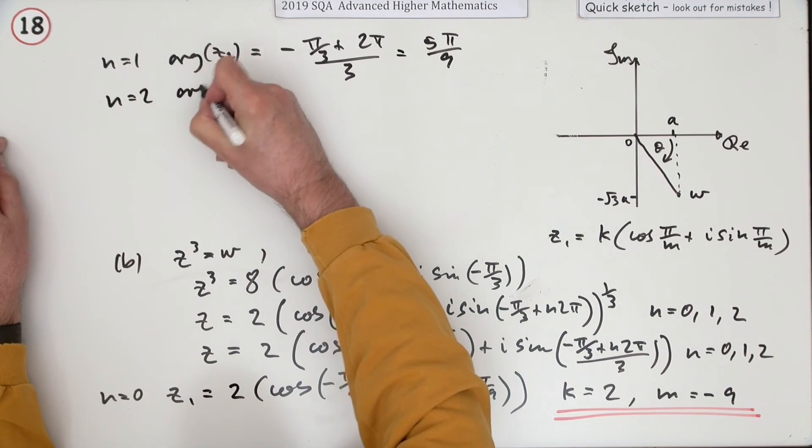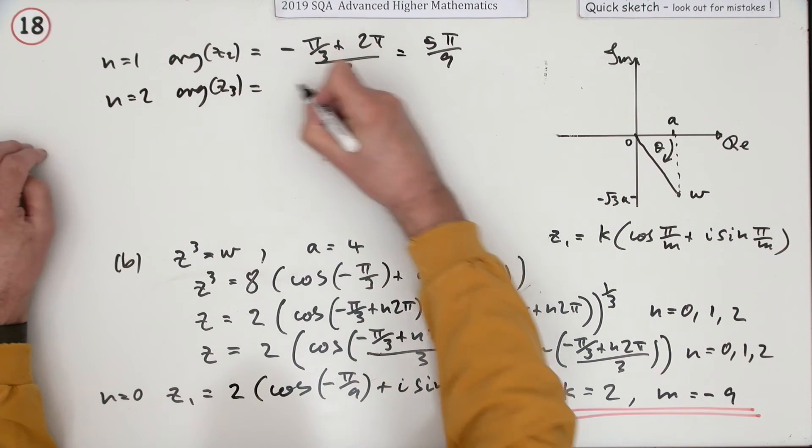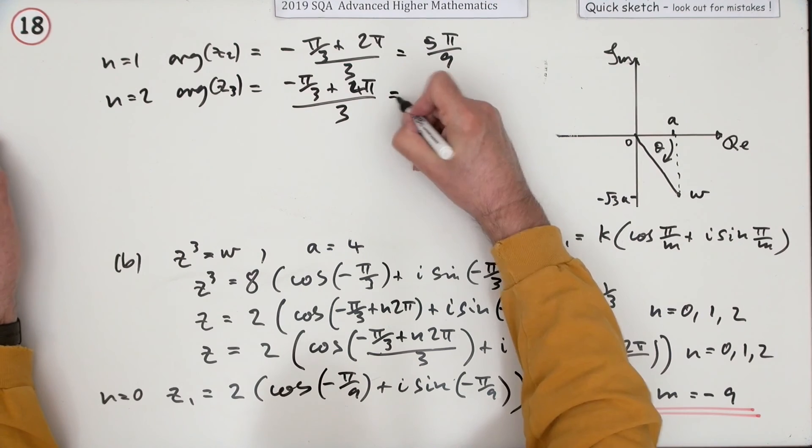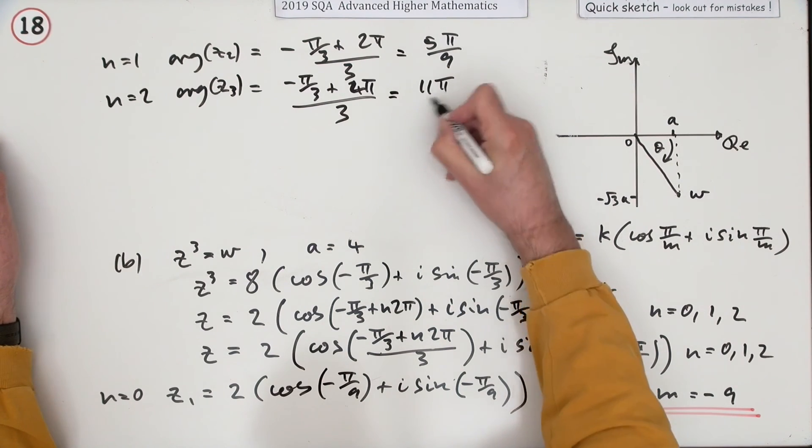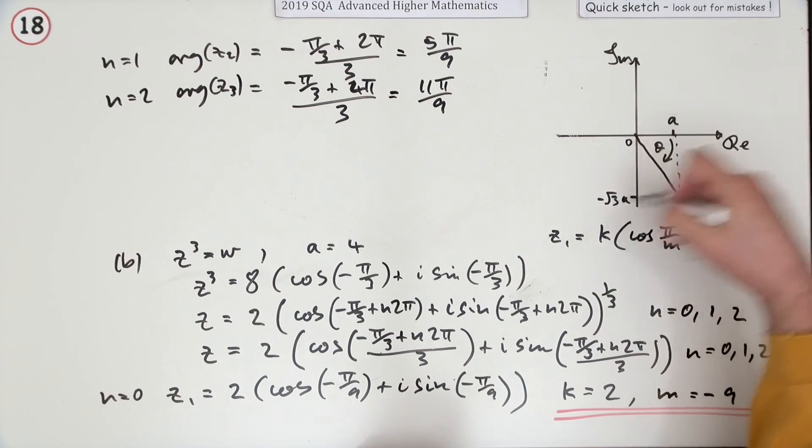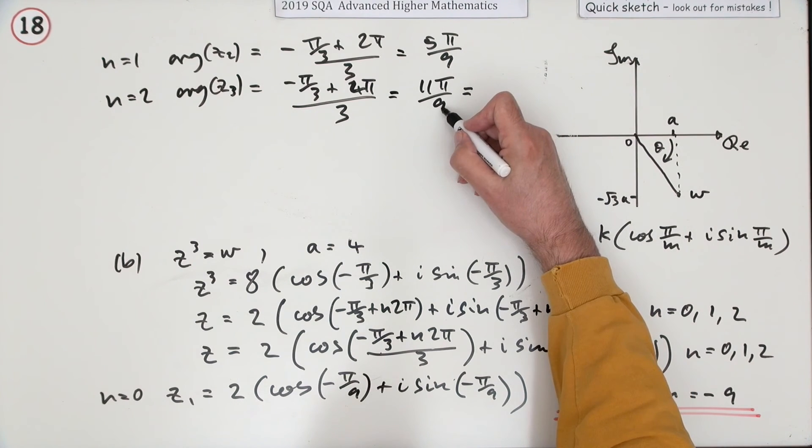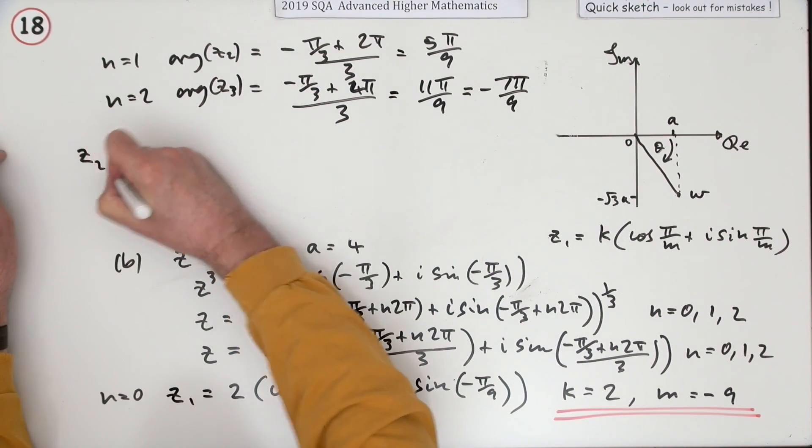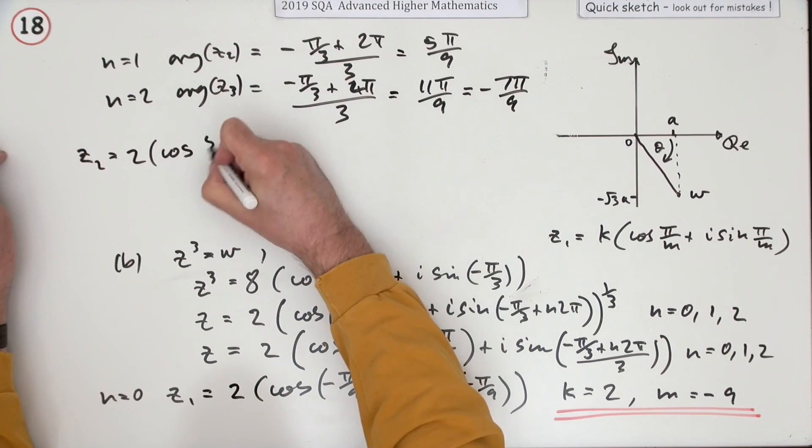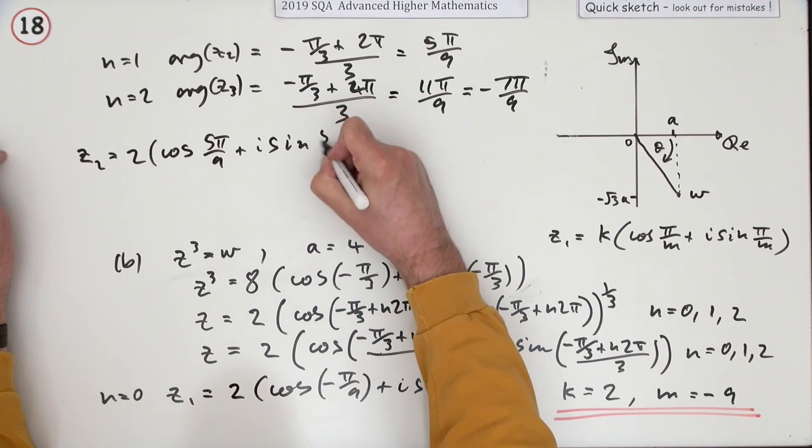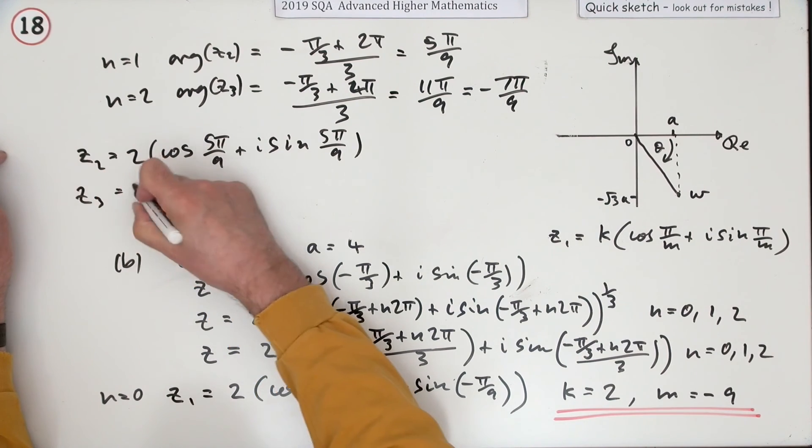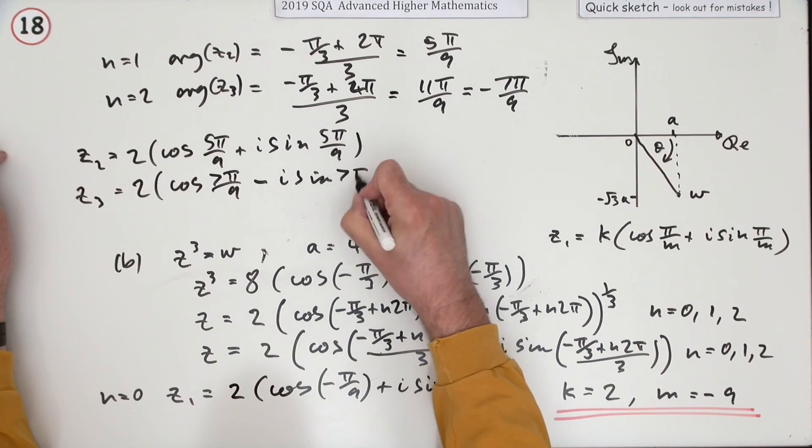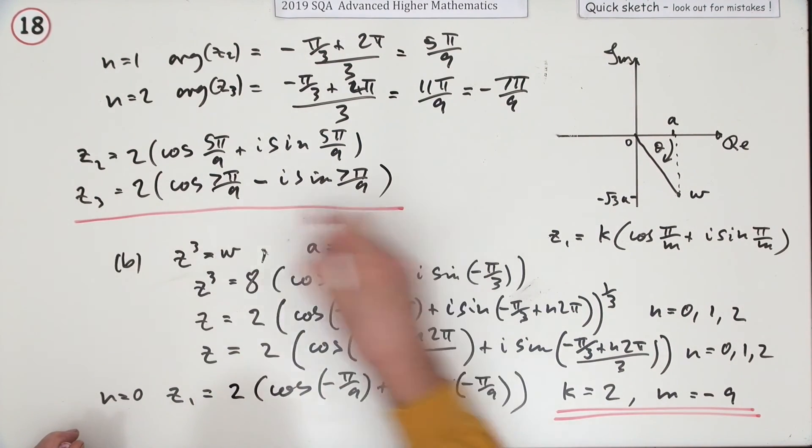And when n is 2, the argument of z3 is going to be negative pi upon 3 plus 4π this time upon 3. 2 times 2 is 4, divide by 3, that's 12 take away 1 is 11π upon 9. They might let you off with that, but really you should be taking the shortest way round. So 11π upon 9, since there's 18 bits all together, 11 away from 18 is negative 7π upon 9. So I can write them out now. z2 is 2 cos 5π upon 9 plus i sine 5π upon 9, and z3 is 2 cos - since it's negative I'm going to put 7π upon 9 minus i sine 7π upon 9. Those would be the remaining two roots.